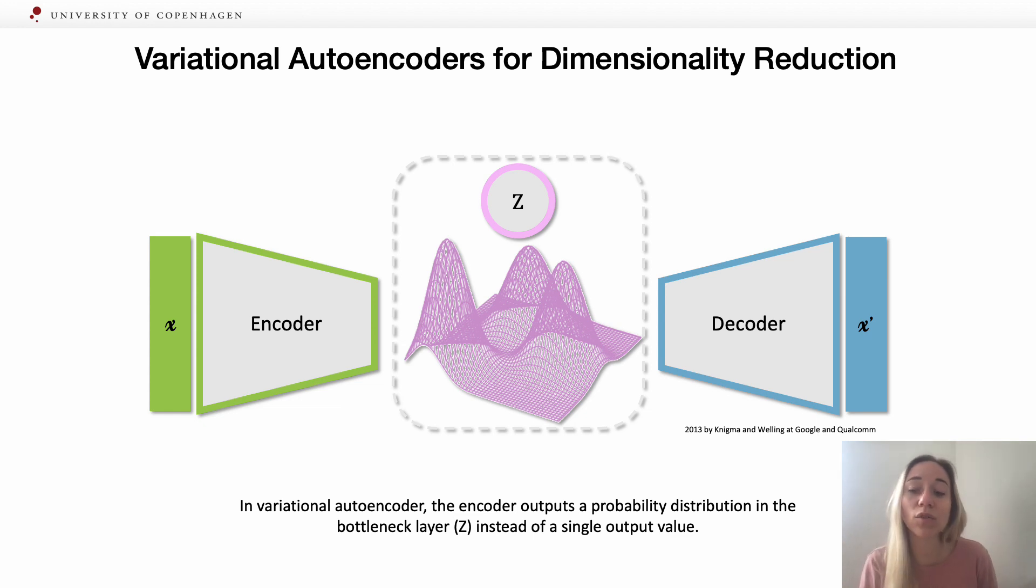In general, the variational autoencoder framework uses deep neural networks, an encoder and a decoder to learn a representation from complex data without supervision. The main purpose of variational autoencoders is to reconstruct the input.